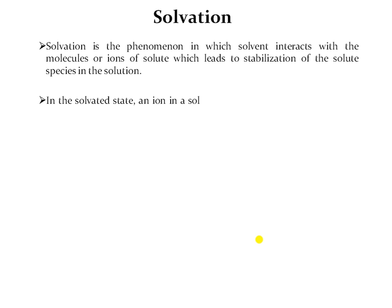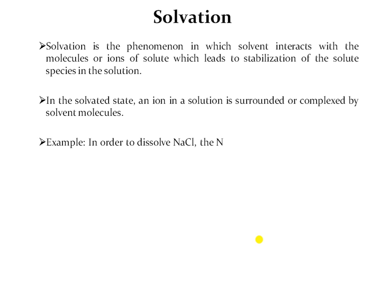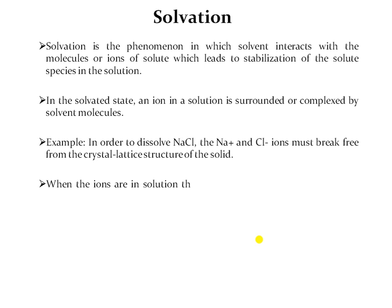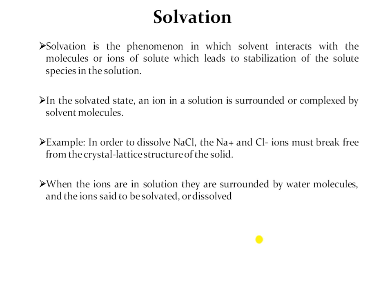In a solvated state, an ion in the solution is surrounded or complexed by solvent molecules. If your solute is ionic in nature, then the ions of your solute are surrounded by the solvent molecule. For example, sodium chloride has a positively charged sodium ion and negatively charged chloride ion. These ions dissociate from the crystal lattice as sodium chloride enters into water, and the ions in solution surrounded by water molecules are said to be solvated.